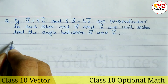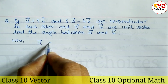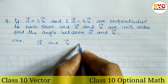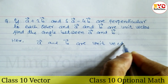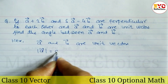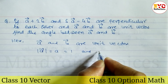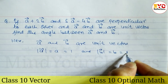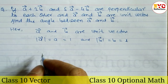Since a and b are unit vectors, the modulus of a equals 1 and the modulus of b equals 1. So modulus of a squared equals 1 and modulus of b squared also equals 1.